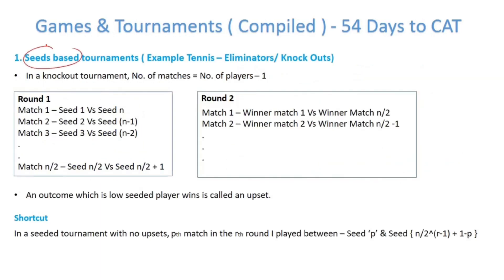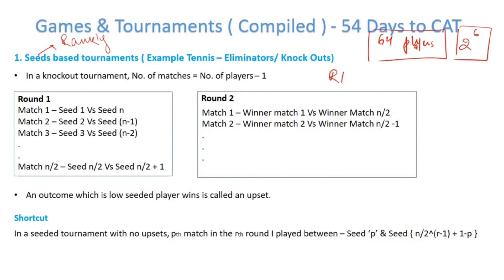In a seed-based tournament, every player is assigned a seed, which is their ranking. Let's say there are 64 players — generally the number of players is a power of 2, so 2 to the power 6. In the first round, the 1st player plays the 64th player, the 2nd plays the 63rd, and so on, with 32 playing 33. The sum of the two players' seeds always equals 2 to the power n plus 1, which is 65. This is one way to check your answer.